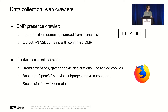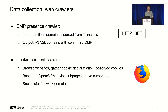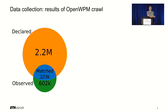We implemented two web crawlers. The first identifies whether a target website uses one of the supported CMPs — given six million domains from the Tranco list, it identified 37,500 domains using one of those CMPs. The second crawler emulates real browsers using the OpenWPM framework, extracts declarations from the consent notice, and also captures real cookies through browsing. This was successful on 30,000 websites.